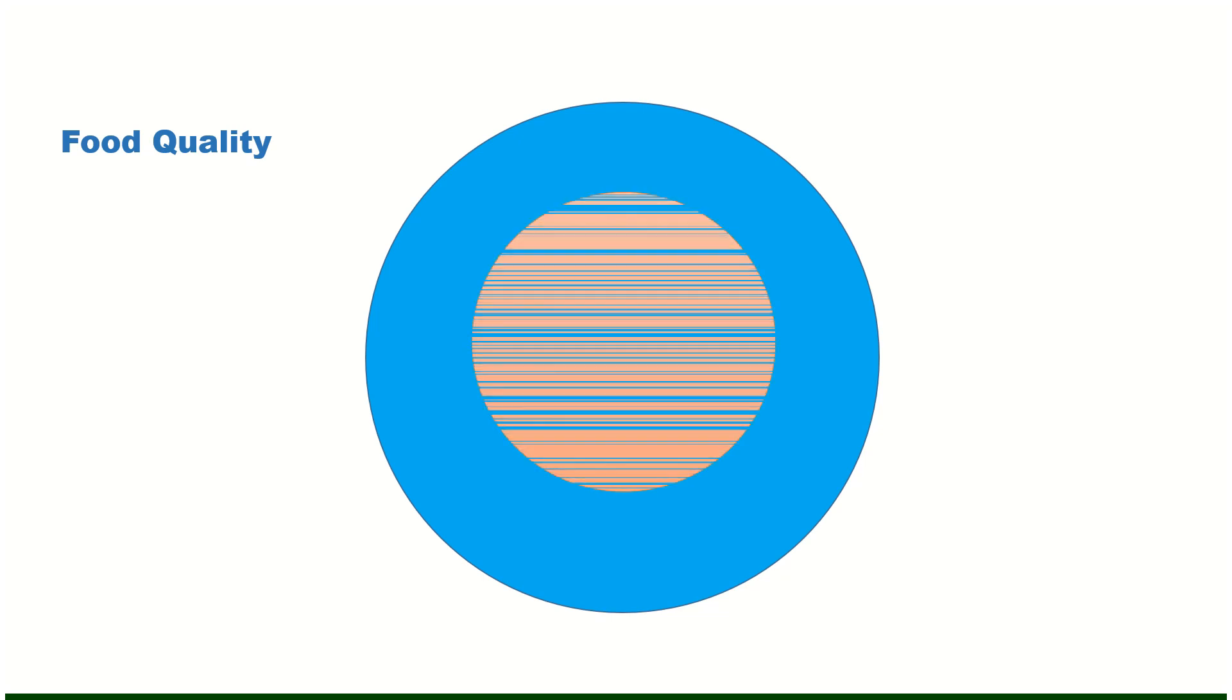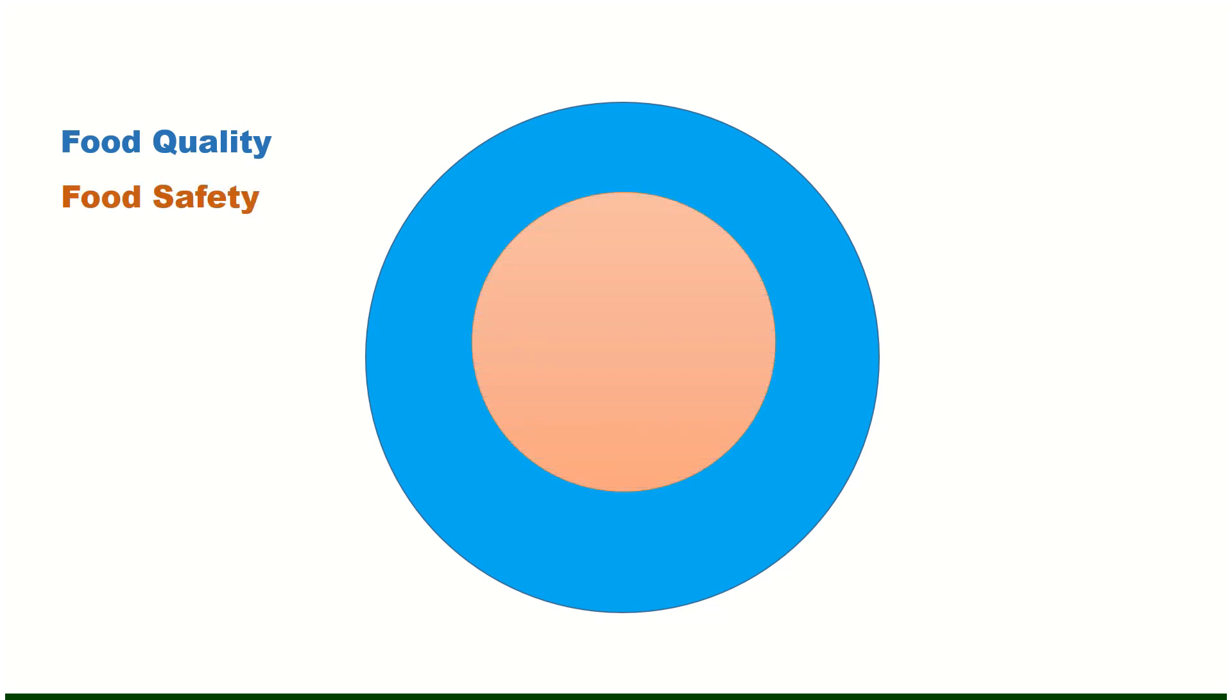So let's start and consider this blue circle is food quality. Then comes an orange circle that represents food safety. Inside this orange circle comes a small circle in green color that shows food defense and another small circle in yellow showing food fraud.